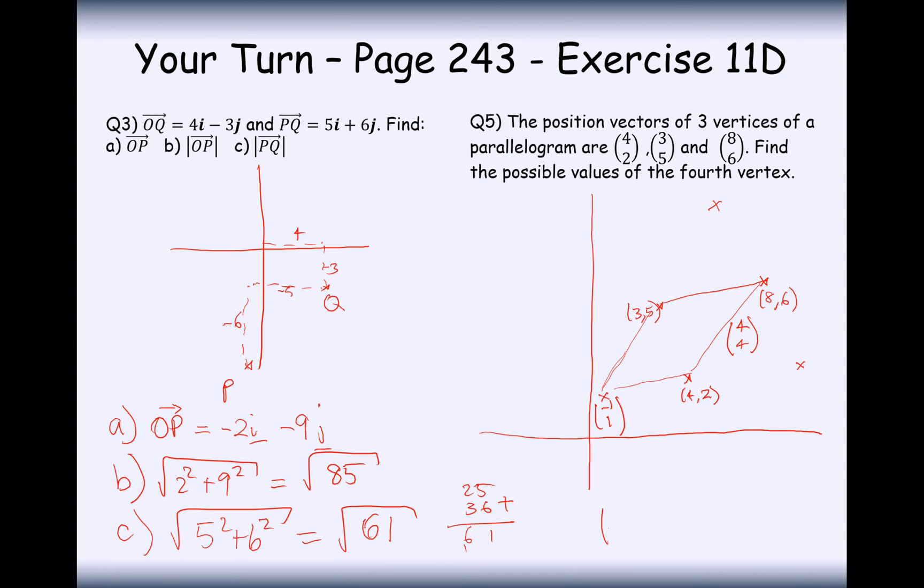Let's have a look and see if the parallelogram was this way now. If we get from 3, 5 down to 4, 2, that's going to be a movement of 1 across and 3 down. So this is going to be 1 across and 3 down. So that's going to now be at 9, 3. So the second answer here is 9, 3.